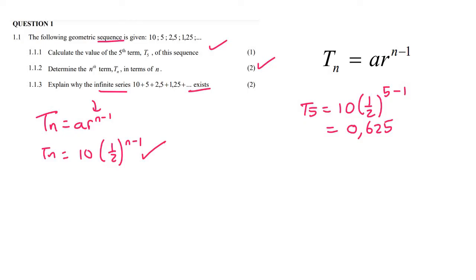An infinite series exists when you have two conditions. First, it has to be geometric, which it is. Second, the ratio must be greater than negative 1 but less than 1.